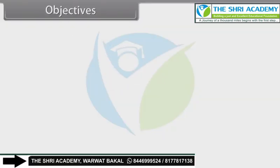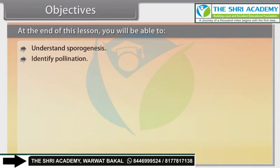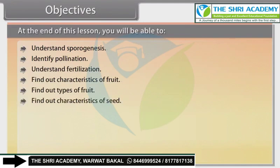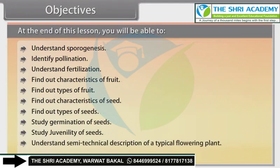Objectives: At the end of this lesson you will be able to understand sporogenesis, identify pollination, understand fertilization, find out characteristics of fruit, find out types of fruit, find out characteristics of seed, find out types of seeds, study germination of seeds, study juvenility of seeds, understand semi-technical description of a typical flowering plant, and study description of some important families.